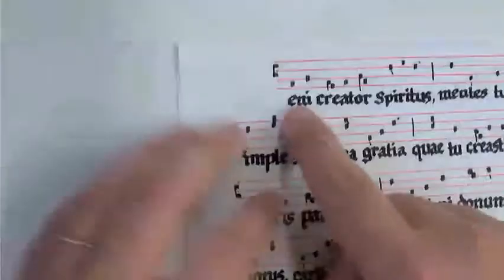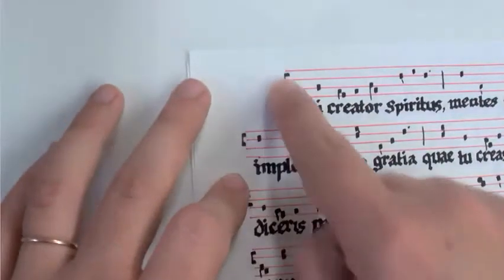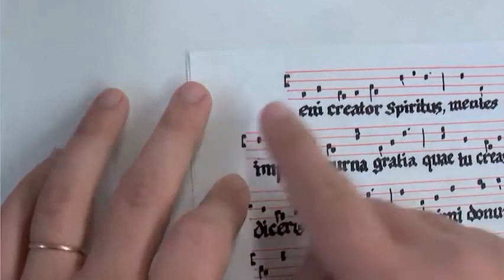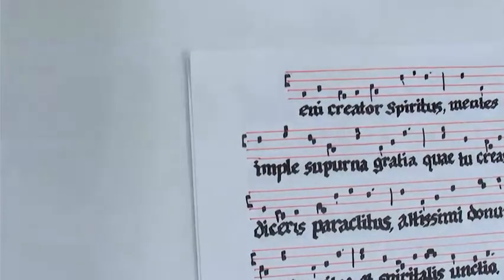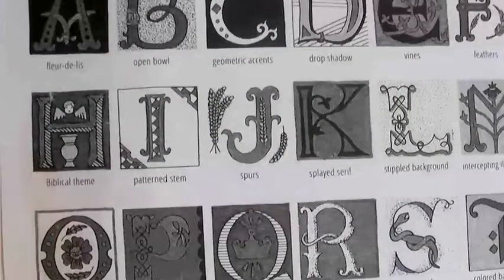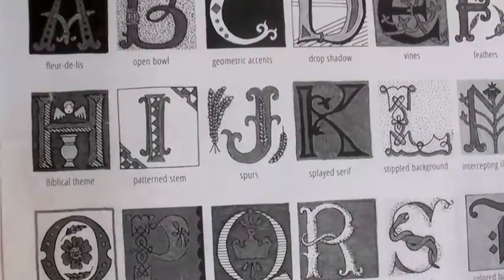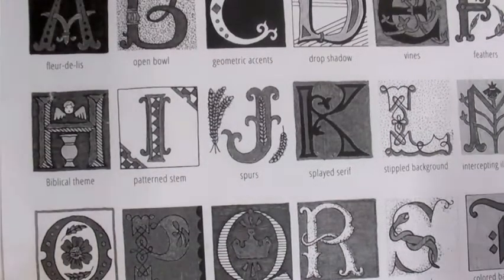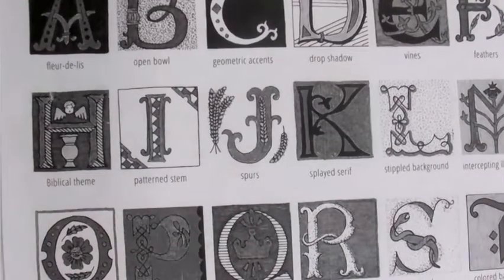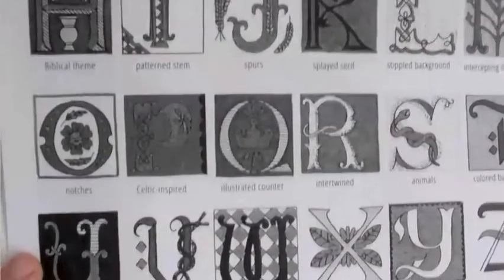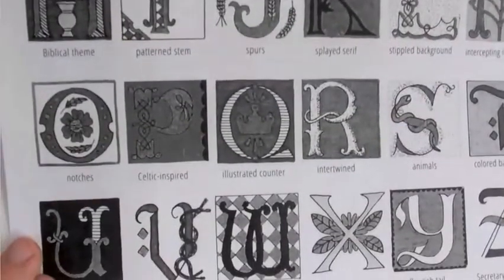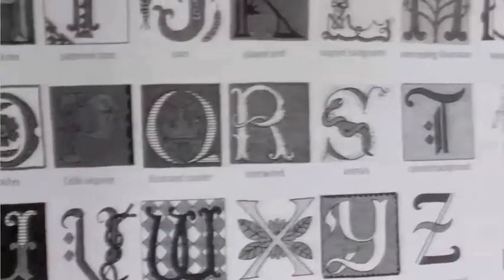So I left out the V at the very beginning because I wanted to do an illuminated letter there. Now I have some examples here of different kinds of illuminated letters one could make. These are just some examples, but the sky is the limit with the different kinds of designs. Your imagination is really the limit when it comes to different designs.